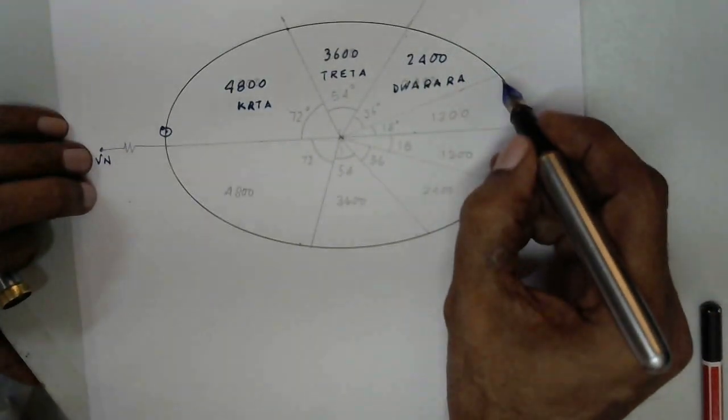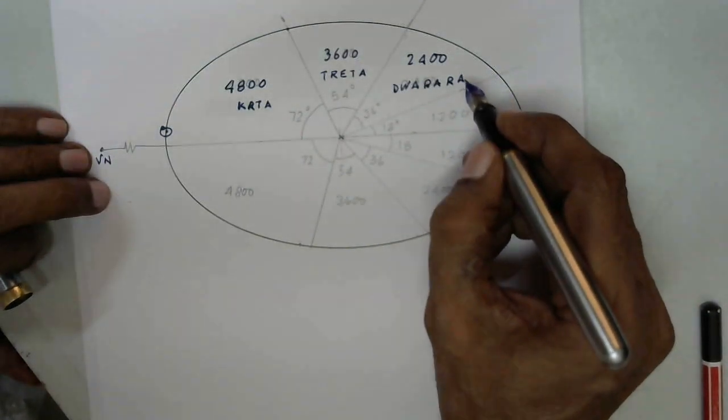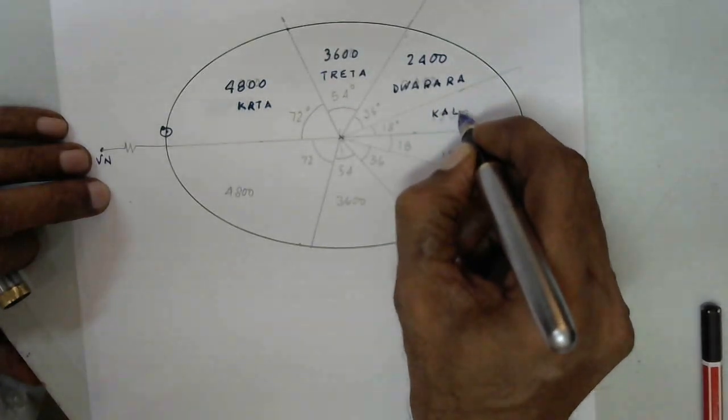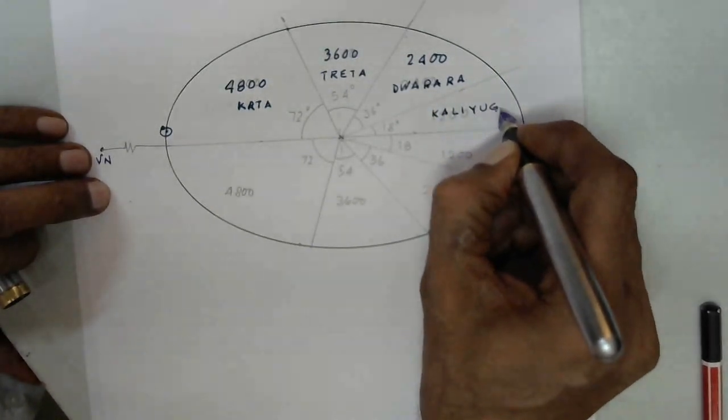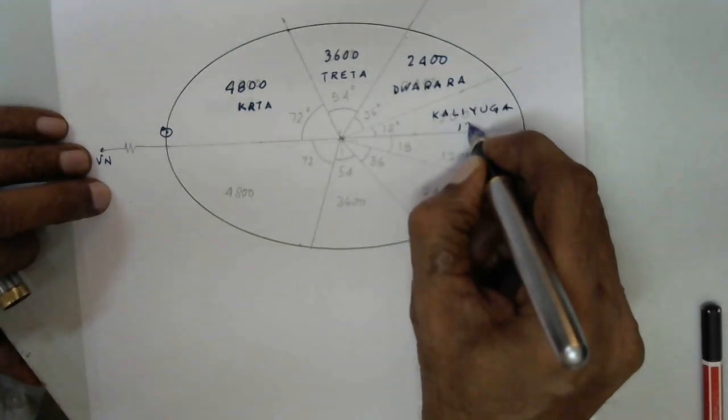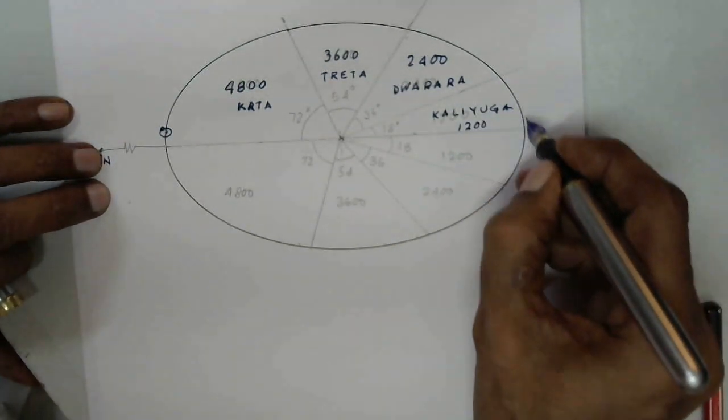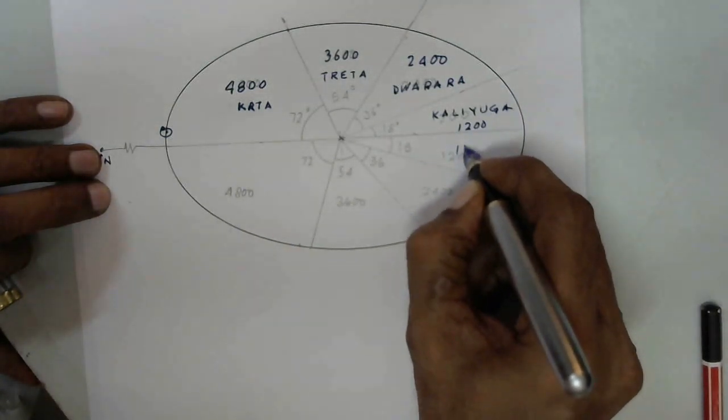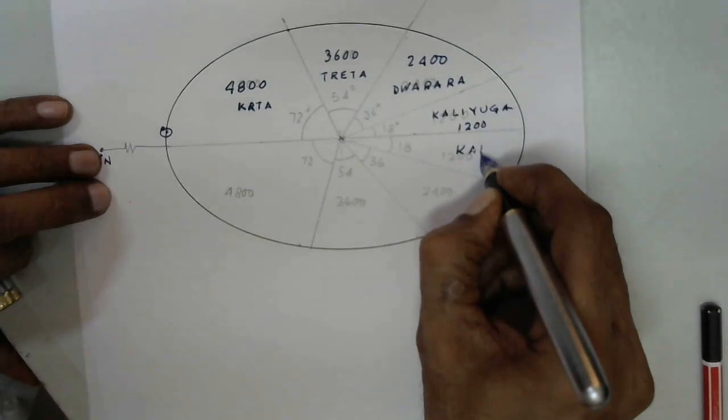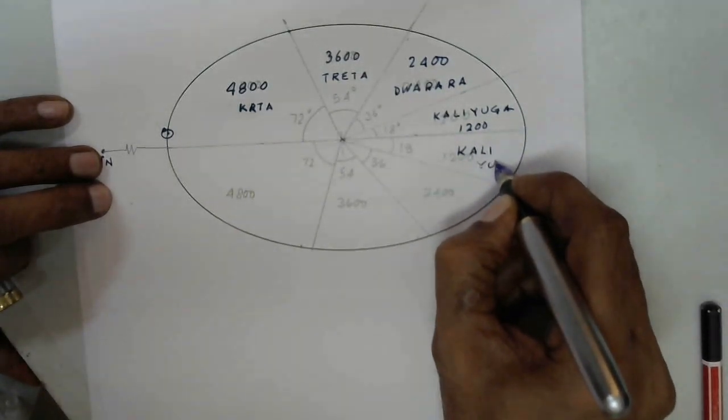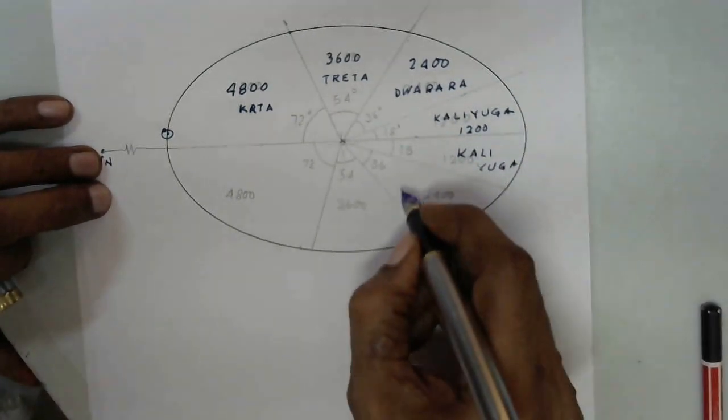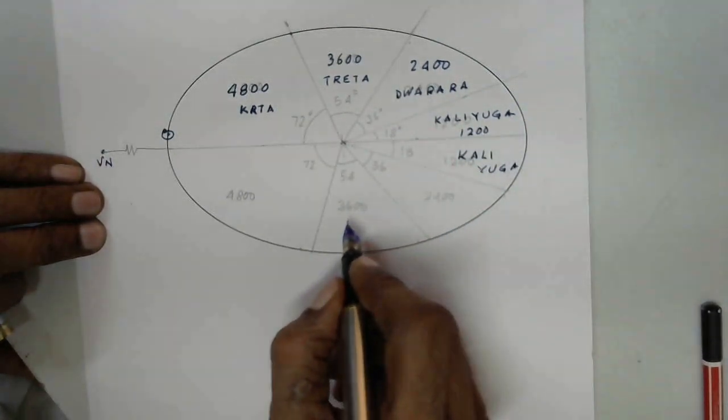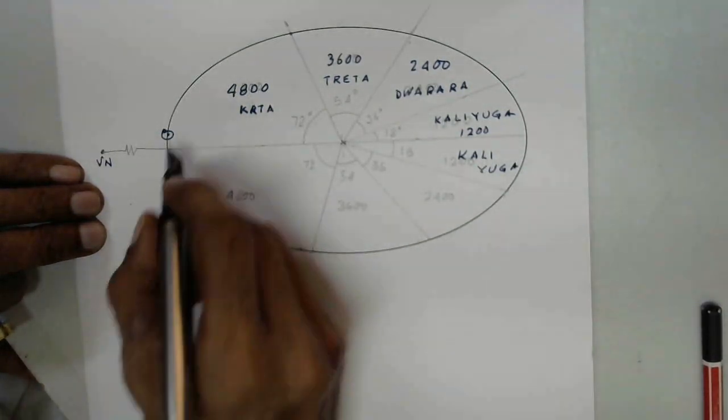As it moves further and crosses this 2400 years, it comes into the period called Kali Yuga which is 1200 years. Then the sun will go back on the ascending side. So this also will be Kali Yuga, the second Dwapar Yuga, ascending Treta Yuga and ascending Krita Yuga.